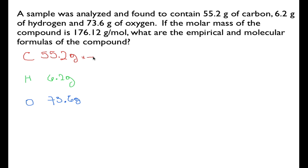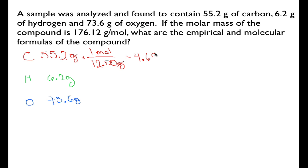We do that using the molar mass. For carbon, we convert grams of carbon into moles of carbon using the molar mass of carbon, which is 12 grams per mole. The grams cancel and we're left with 4.6 moles of carbon.